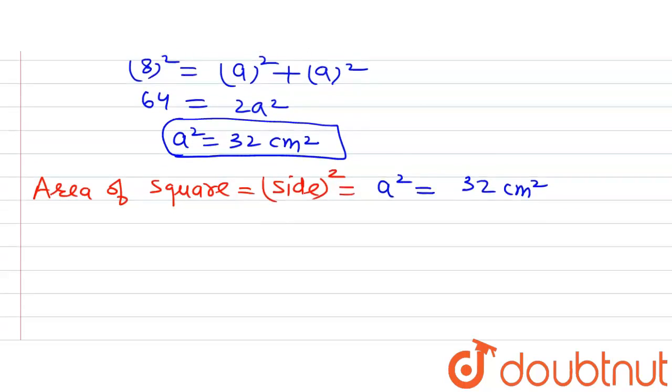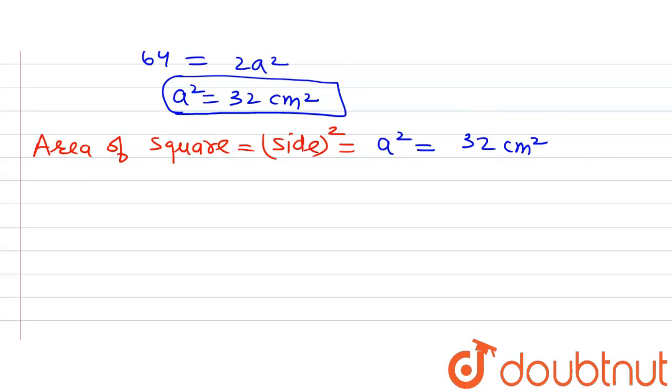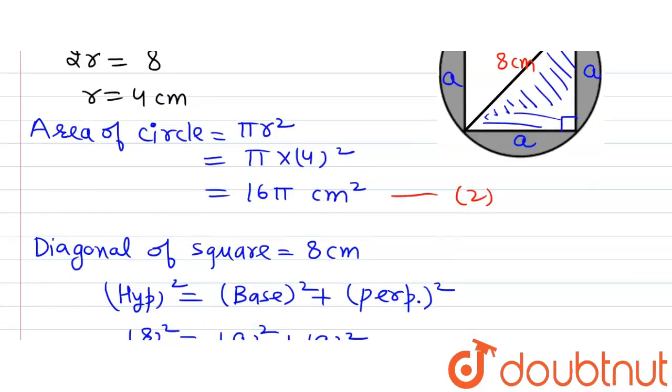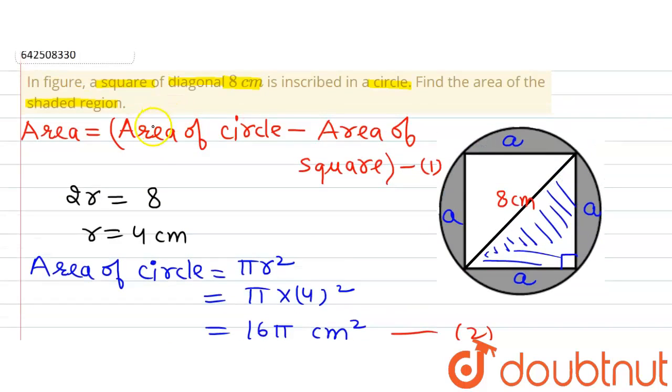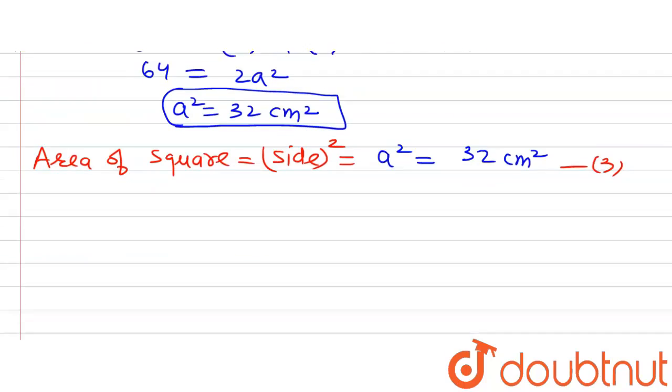So now we have the area of square as well. Let's name this as equation 3. Now we have the area of square, we have the area of circle equation 2, and we have the relation that area of shaded region equals area of circle minus area of square.